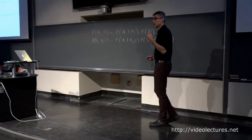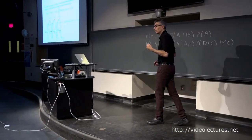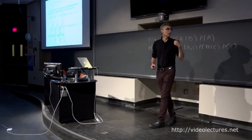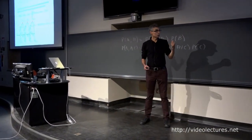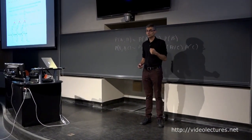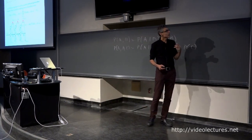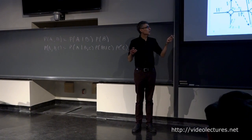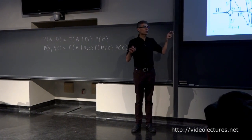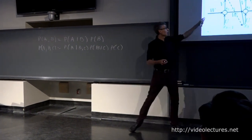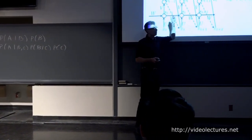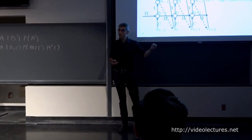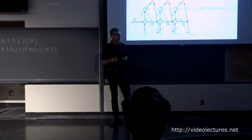We can do all the things we usually care about with probabilistic models: we can sample a sequence, compute the probability of a given sequence. Because those probabilities are smooth, easy-to-compute functions of the parameters — all the weights — we can compute the derivative of the log likelihood with respect to parameters and do maximum likelihood training.